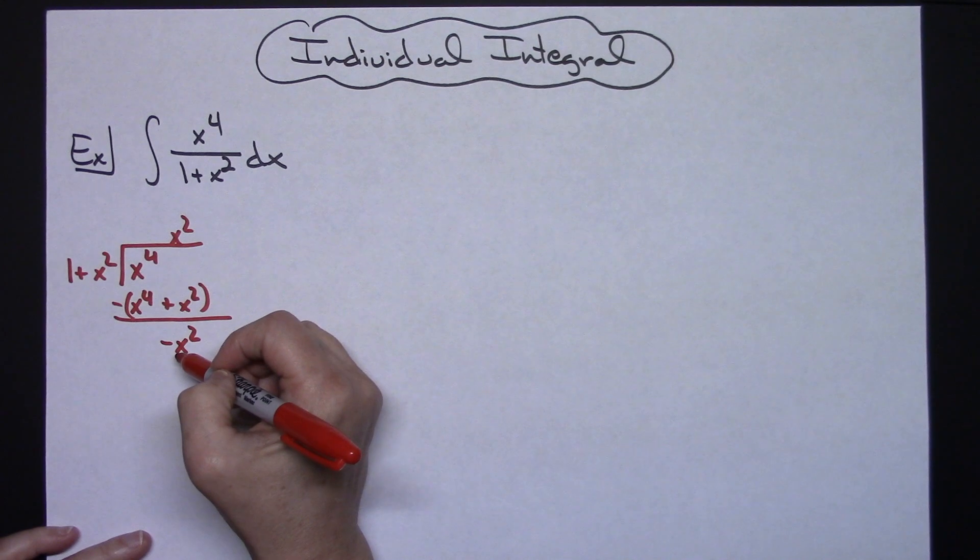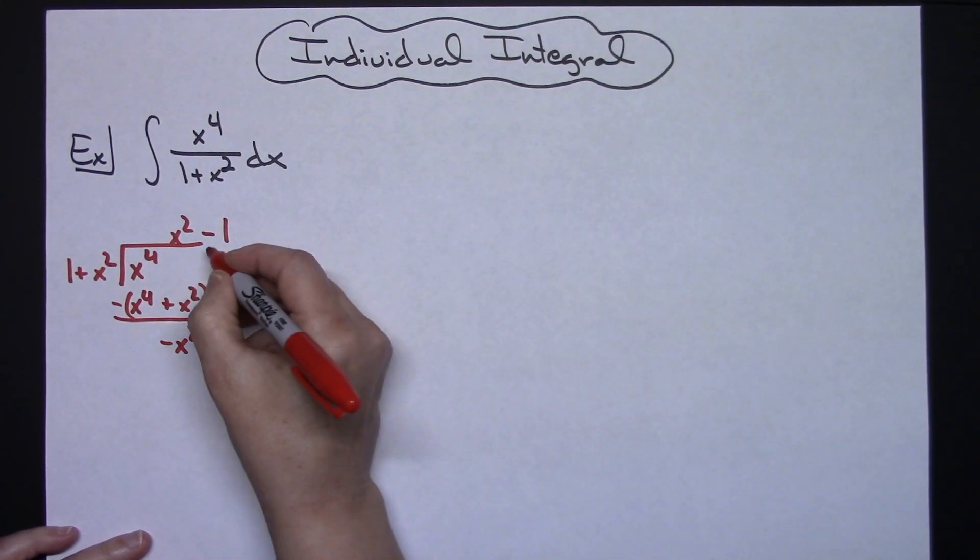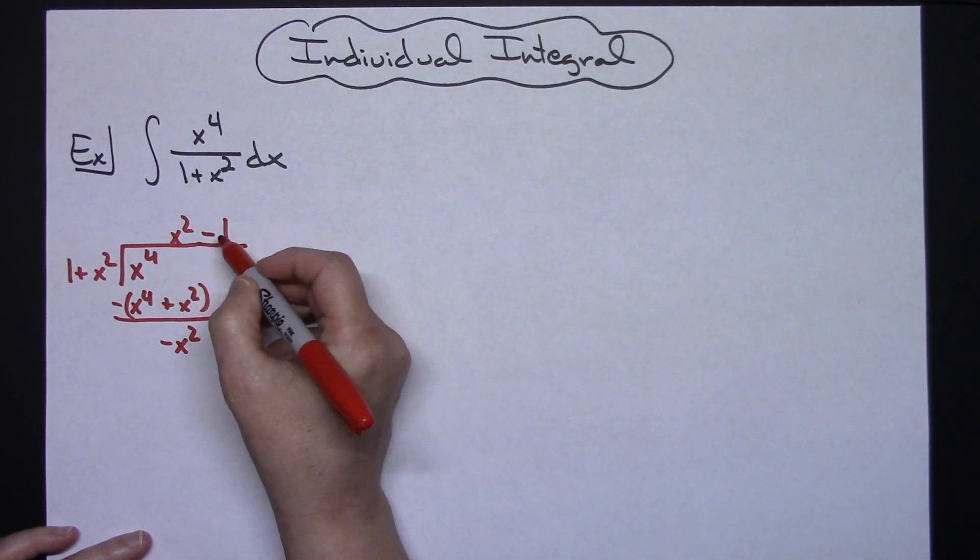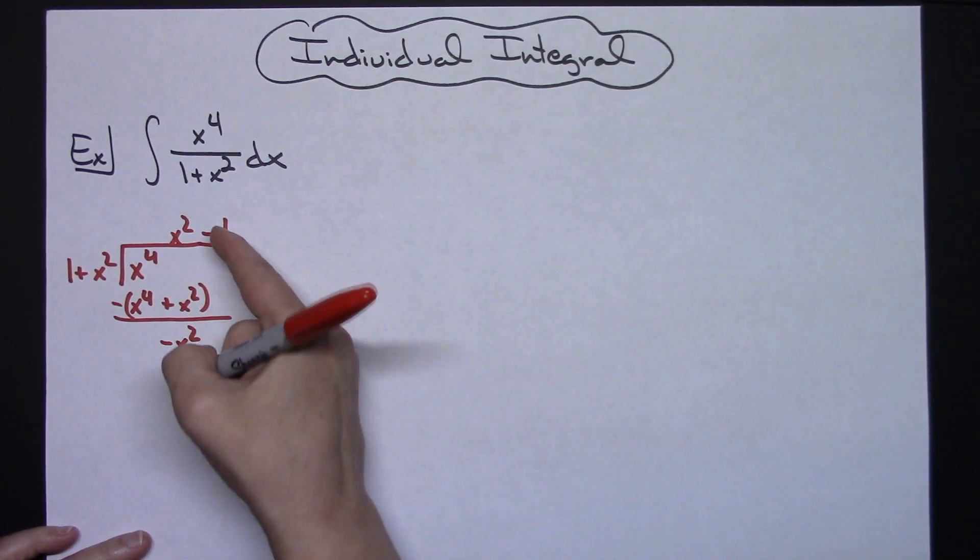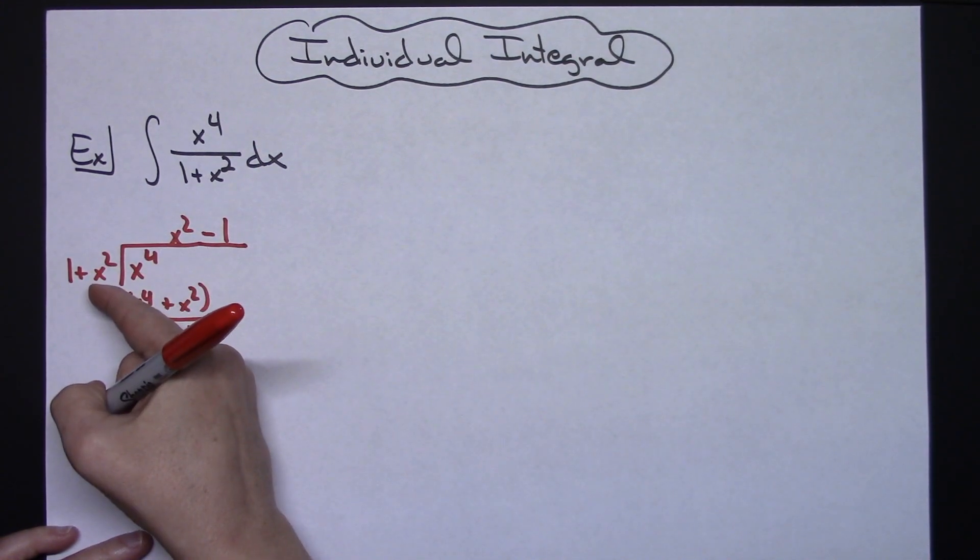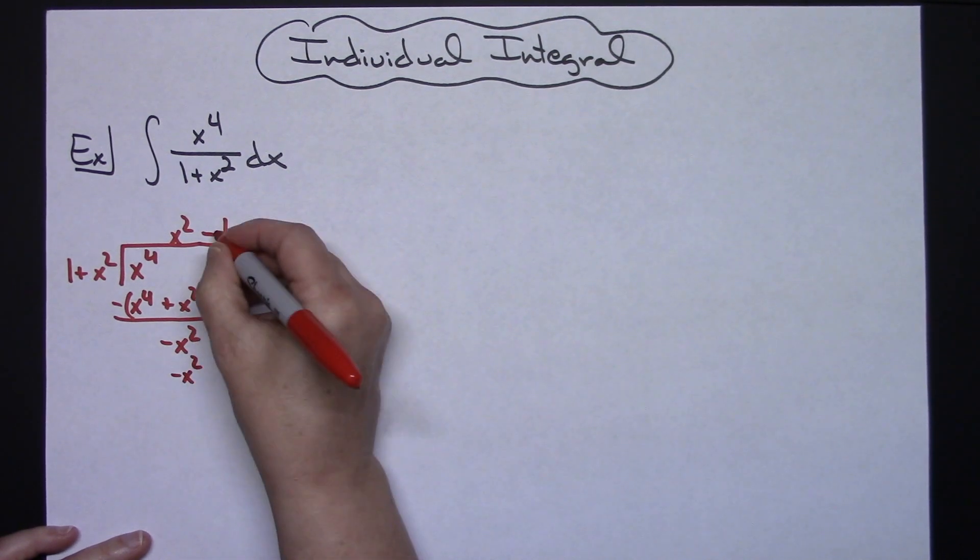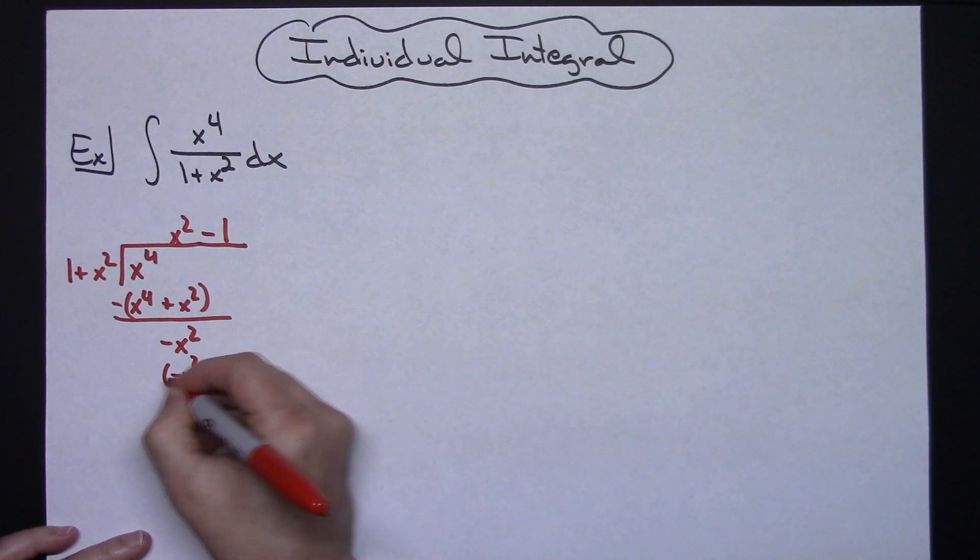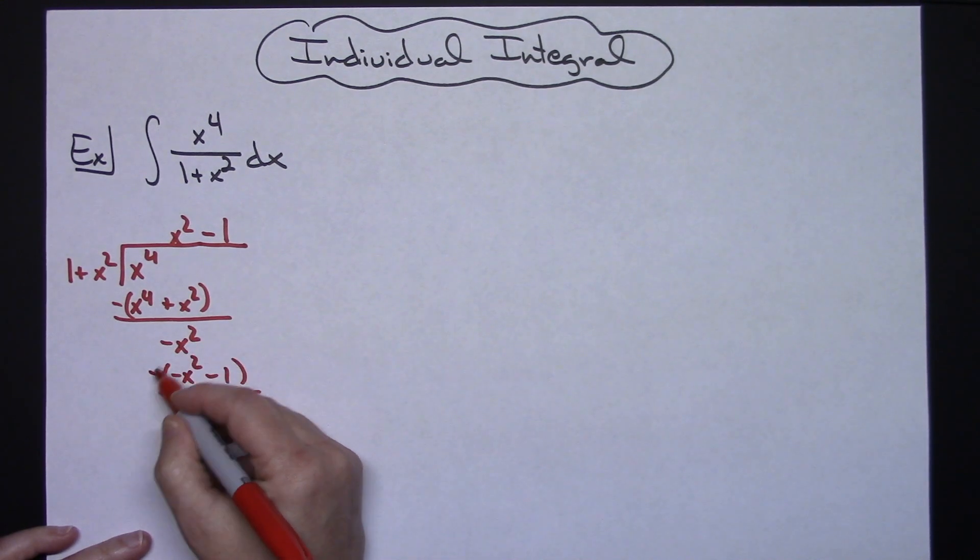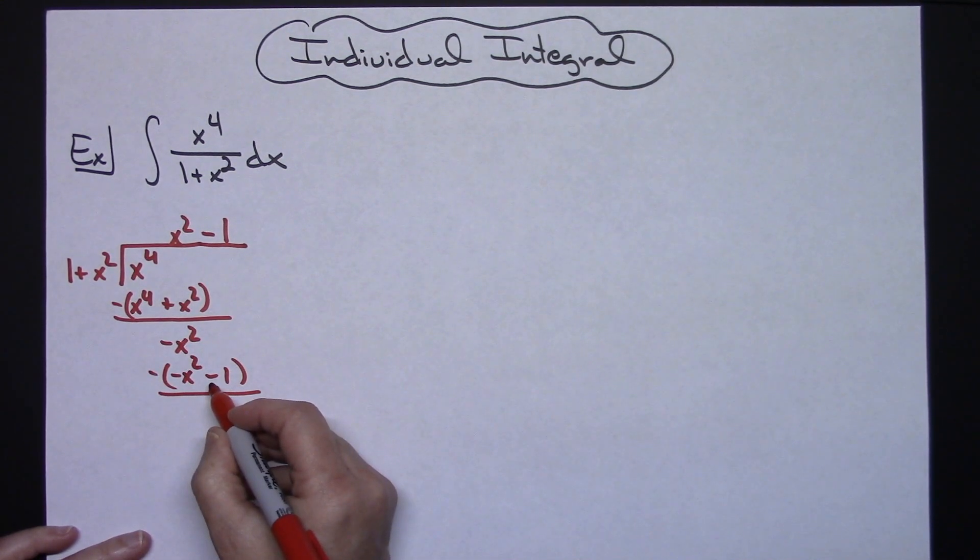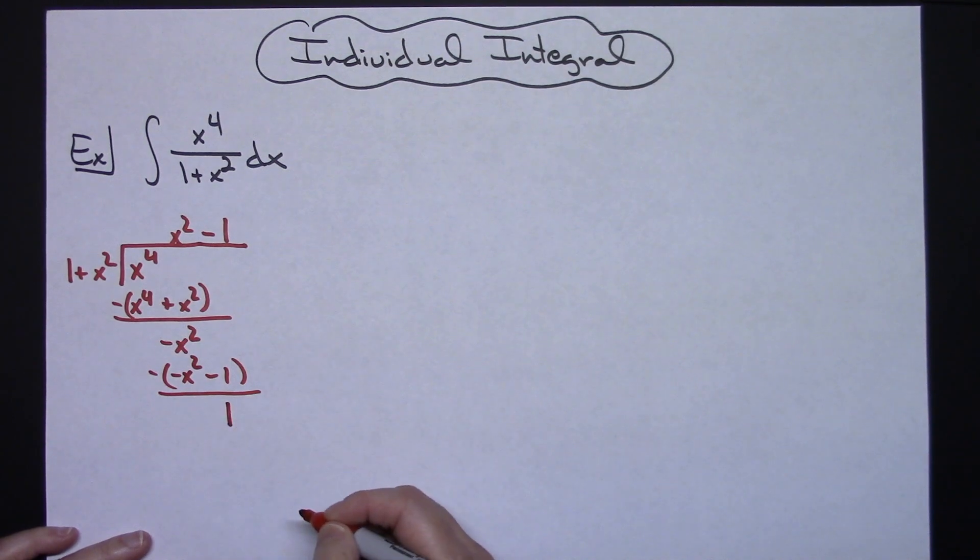x squared goes into negative x squared negative 1 times. Going ahead then and multiplying, negative 1 times the x squared here will give me negative x squared. Negative 1 times 1 will give me negative 1 there and we are subtracting that. So those x squareds are going to fall out and then I will have a remainder of 1.